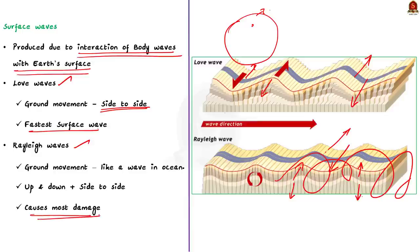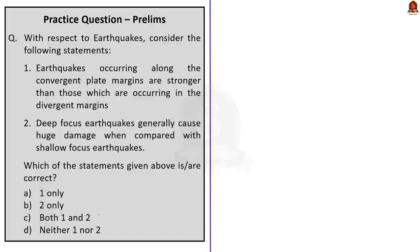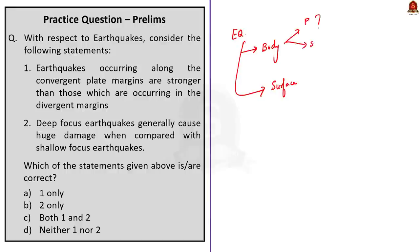With this we have come to the end of this particular article discussion. We saw about body waves and surface waves. In body waves, we saw about the P waves shadow zone and the S waves shadow zone. After that, we saw about surface waves — love waves and relay waves. Let us now move on to the next article discussion.